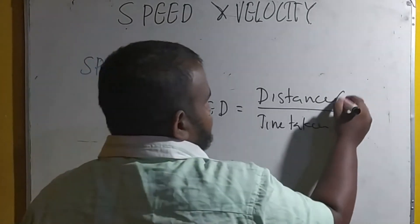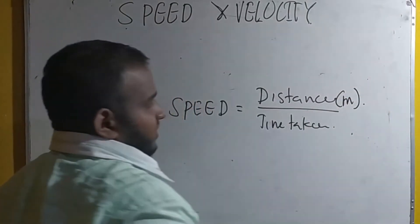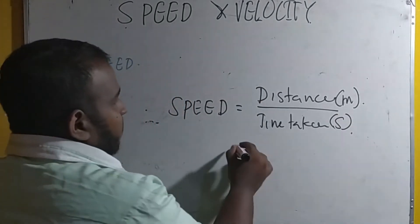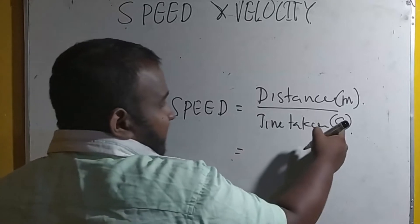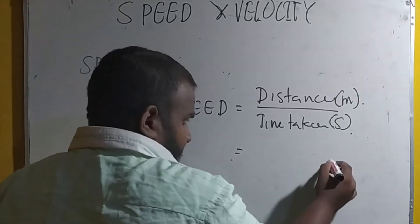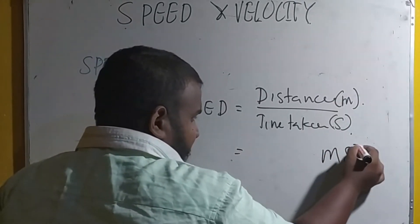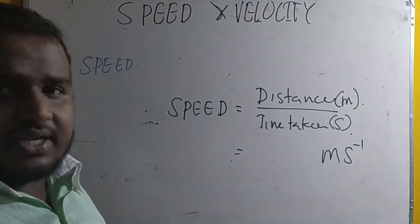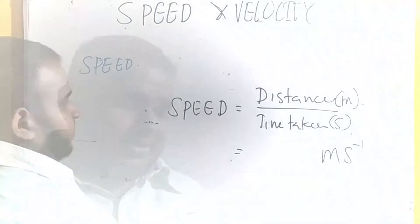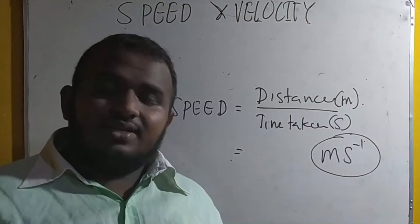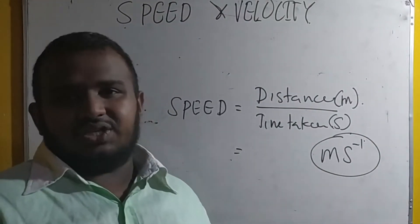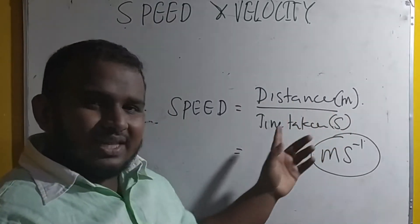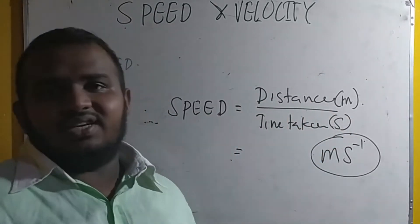As you all know, we measure distance in meters and time in seconds. Therefore, the unit will be meter per second. Speed is a scalar quantity which has no direction. Distance has no direction, therefore speed has no direction.